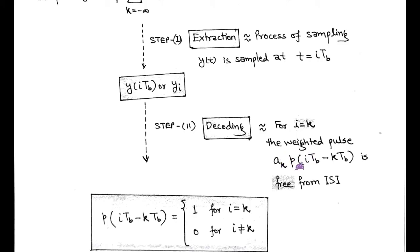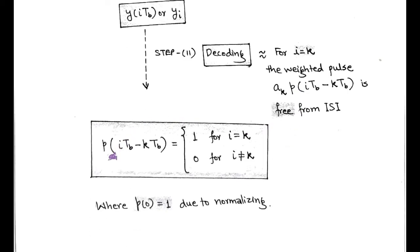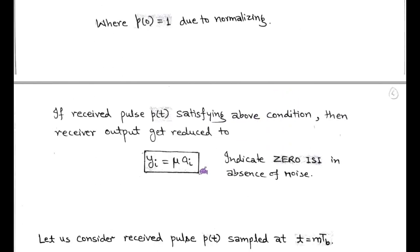Since the normalization of pulse p(t) equals 1, after performing extraction and decoding, the pulse p(i*Tb minus k*Tb) equals 1 for i equals k — the case for free inter-symbol interference — and equals 0 for i not equals k. For i equals k, p(0) equals 1 due to normalization. When the receive pulse p(t) satisfies this condition, we get the receiver output yi equals mu times ai, which is called distortionless transmission having zero inter-symbol interference.